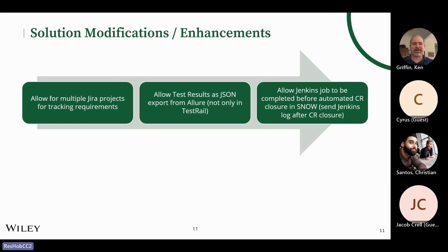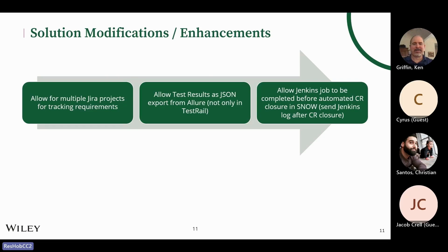We went through a couple of iterations. The first one — Research Exchange — was using TestRail, so that was straightforward. When we onboarded Wiley Plus we made a second modification in version two: we now accept not only projects tested in TestRail but also JSON exports from Allure. That was a really good modification and it makes us flexible in what we can offer to development and operations teams.